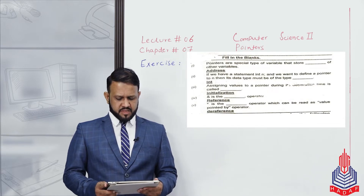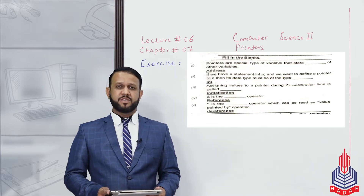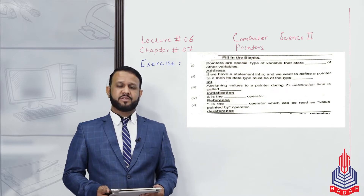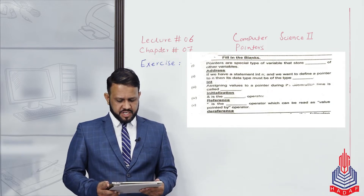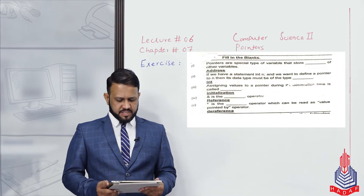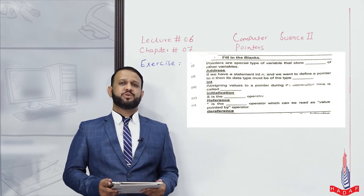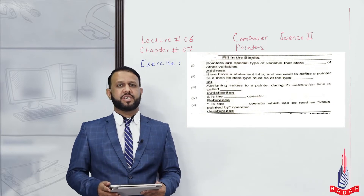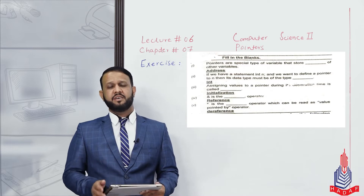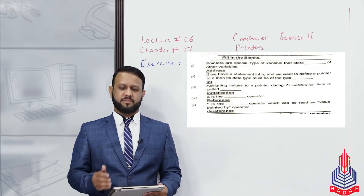Our first blank: Pointers are a special type of variable that store the dash of other variables. A pointer is a special kind of variable that stores the dash of other variables. If we have an integer type variable n and we create a pointer for it, that pointer will also be of integer type. So the answer is int.